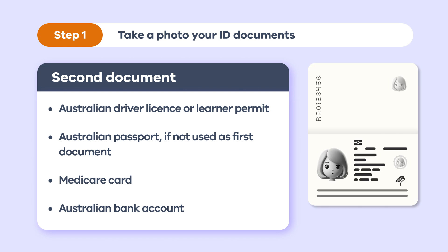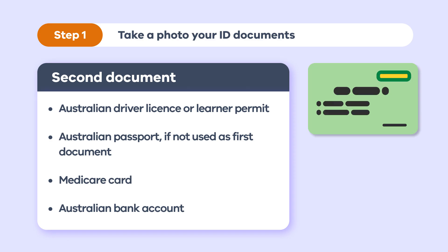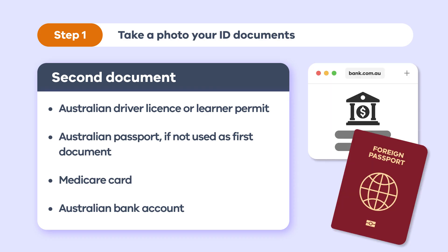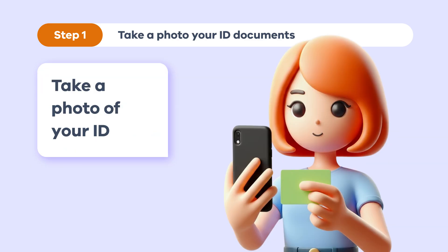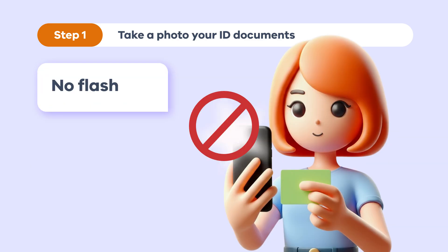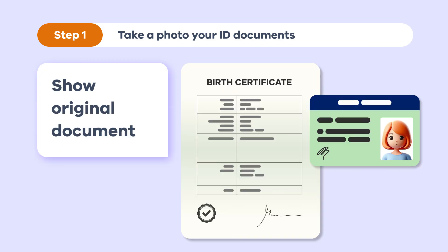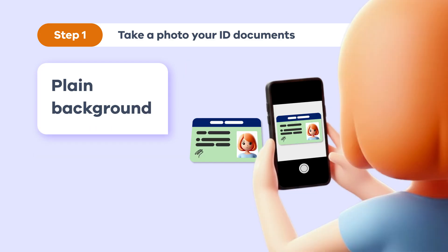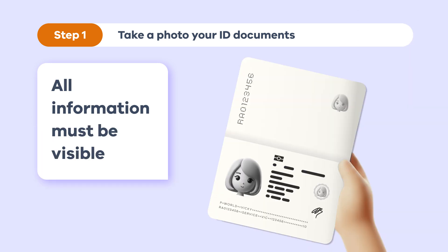Your second document must be an Australian driver licence or learner permit, an Australian passport if you didn't pick it as your first document, or a Medicare card. You can also use an Australian bank account if you chose a foreign passport as your first document. For security reasons, you'll need to take a photo of your documents within this process — you won't be able to upload scans or pictures you've already taken. Your documents must also be the original version and not copies or extracts.